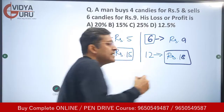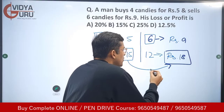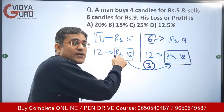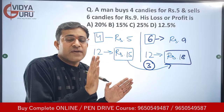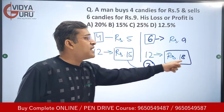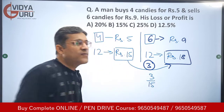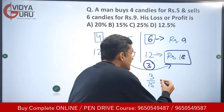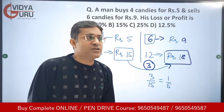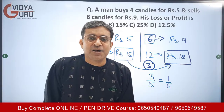The cost price is 15 and the selling price is 18, so a profit of 3 rupees. Whenever we calculate profit or loss we think about the cost price — a profit of 3 rupees on a base of 15, that is 3 by 15, which equals 1 by 5. In percentage terms, 1 by 5 is 20 percent — that is the profit he makes.